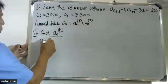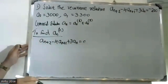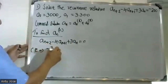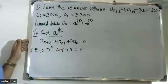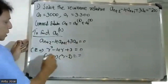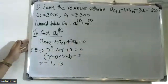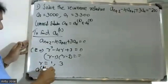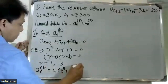To find the homogeneous solution, set a(n+2) minus 4·a(n+1) plus 3·a(n) equal to zero. The characteristic equation is r² minus 4r plus 3 equals zero, which factors to give roots r equals 1 and r equals 3.